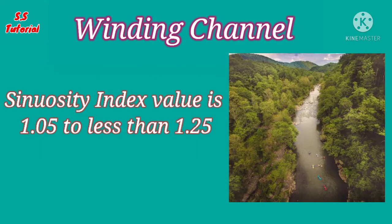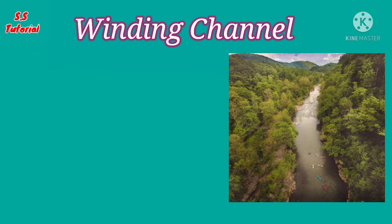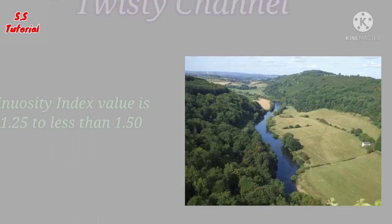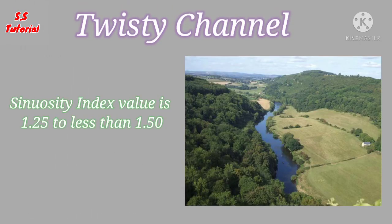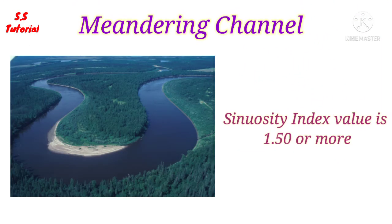Twisty channel: if the value of the sinuosity index is less than 1.50, that channel is known as a twisty channel. Meandering channel: if the value of the sinuosity index is 1.50 or more than that, then it is known as a meandering channel.